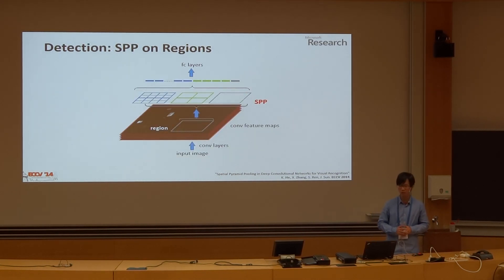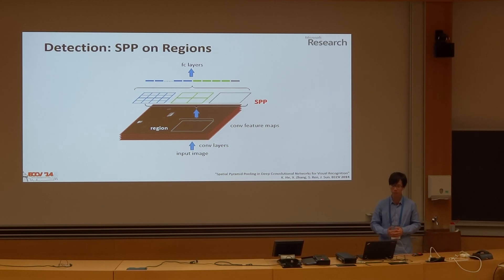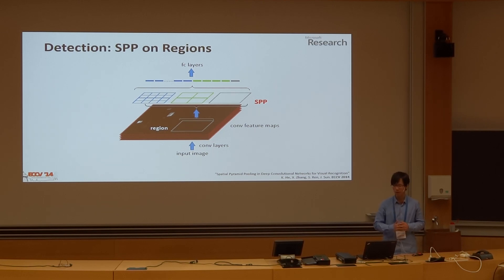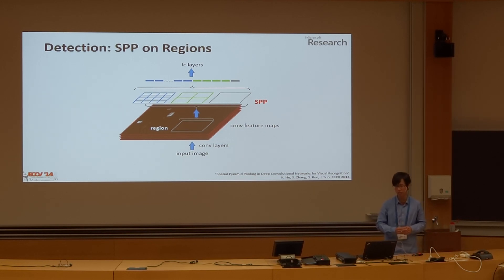I would like to introduce our detection algorithm. The basic idea is to apply spatial pyramid pooling on regions of the feature map. Given an image of any size, we can still apply the convolutional layers since they are just sliding filters. After that, we have the convolutional feature maps of the entire image. If we crop a small region in this feature map and then apply spatial pyramid pooling, we can generate a fixed-length vector and put it into the FC layers. This allows us to extract features very efficiently.